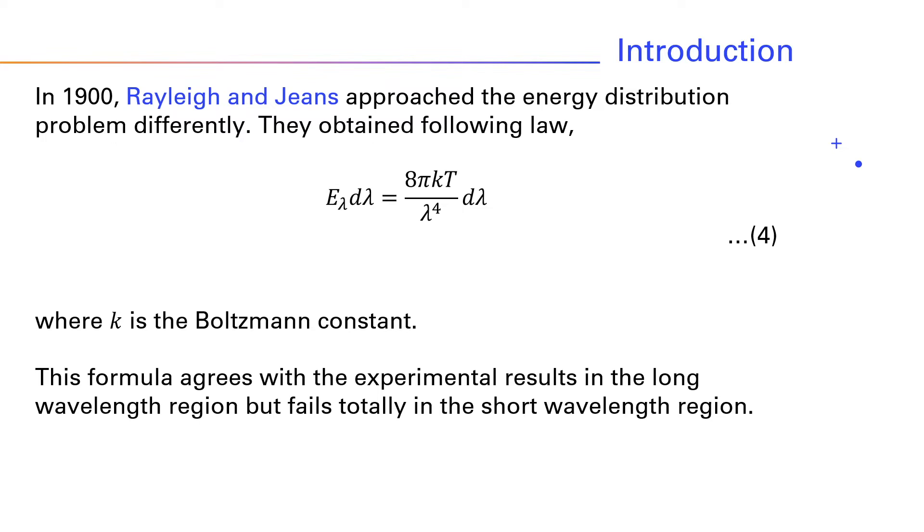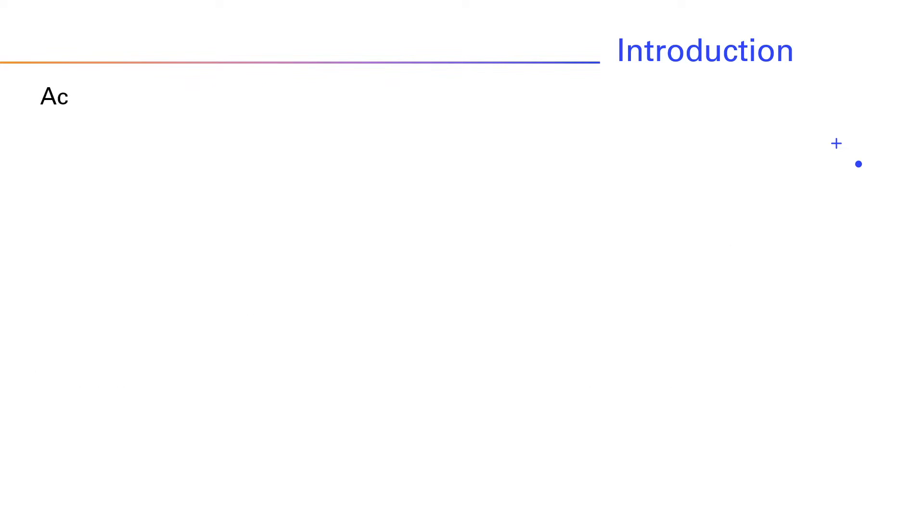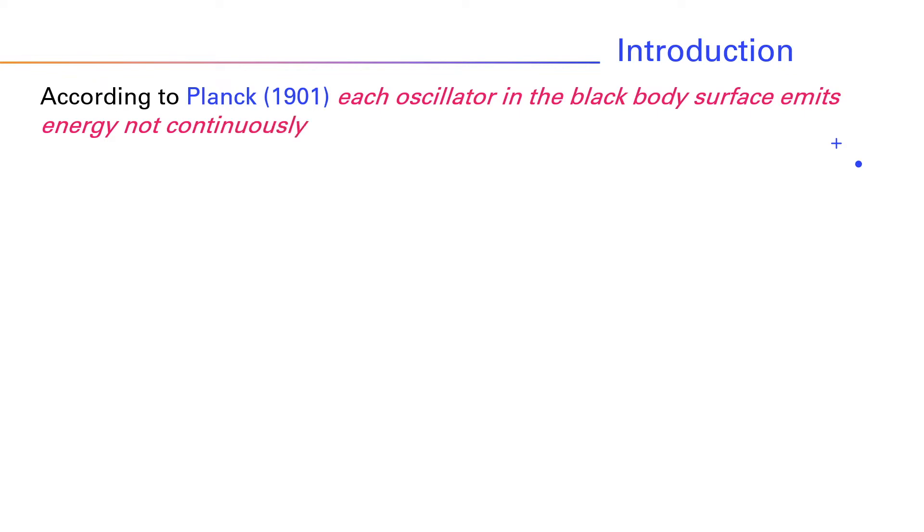Planck proposed a new formula for black body radiation. According to him, each oscillator in the black body surface emits energy not continuously, but in discrete packets of energy: E = 0, ε, 2ε, 3ε, 4ε, etc., where epsilon is a packet of energy called quanta.